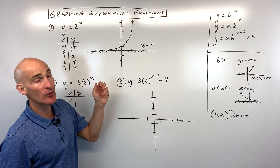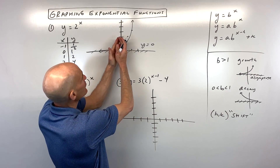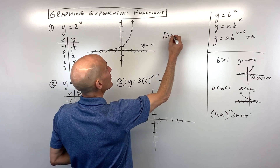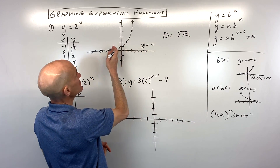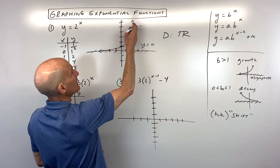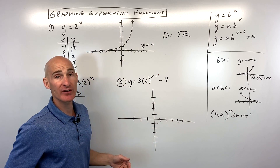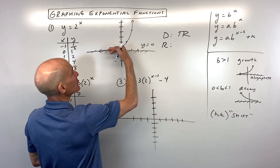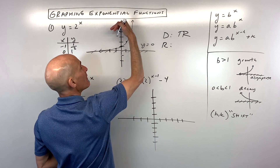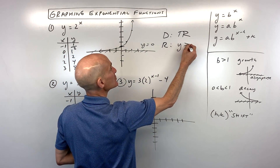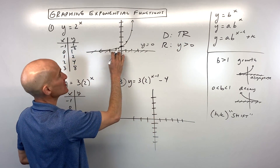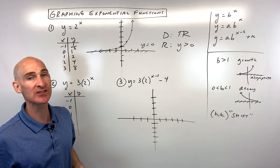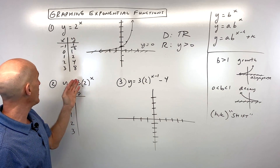Your teacher will often ask for the domain and range. The domain — what can x be — is all real numbers, since the graph extends left and right forever. The range: y values are only above the x-axis, so y is greater than, but not equal to, zero, because the graph approaches the asymptote but doesn't touch or cross it.